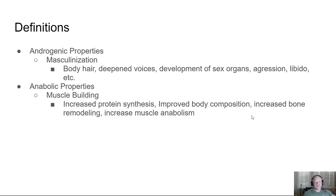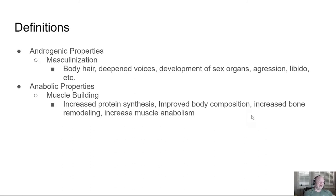Anabolic properties are, at a higher level, the muscle-building nature of the steroid. Digging a little deeper, it includes increased protein synthesis, improved body composition, increased bone remodeling, and increased muscle anabolism.